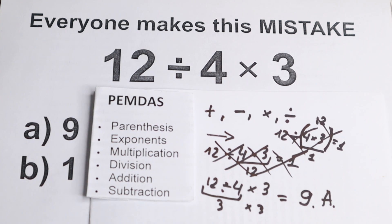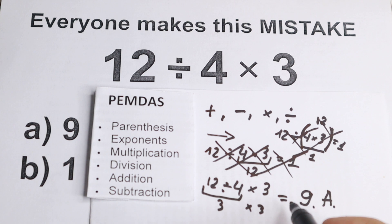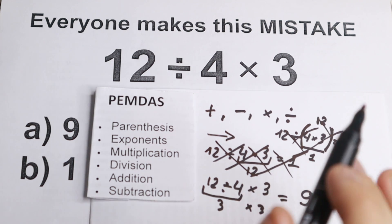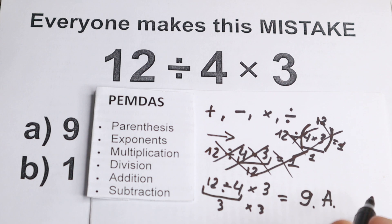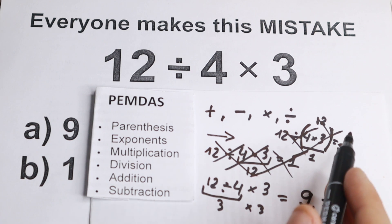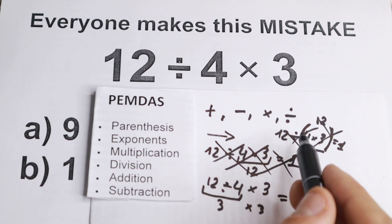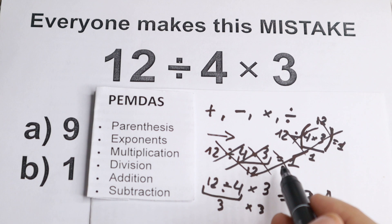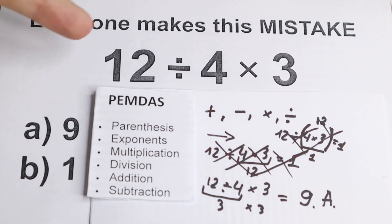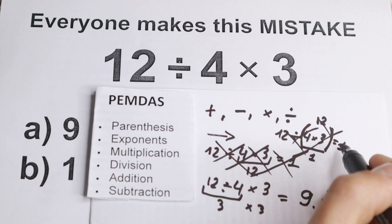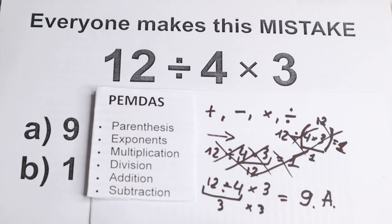Now, if you plug this into a basic calculator on your laptop or phone, the answer will be 1. But if you use a scientific calculator or graphing calculator, you can type in the problem and hit enter and you'll see the answer is 9, because your calculator is smart enough to know the order of operations. So if you plug this into your phone calculator you'll get 1, but for the correct answer use a scientific or graphing calculator.